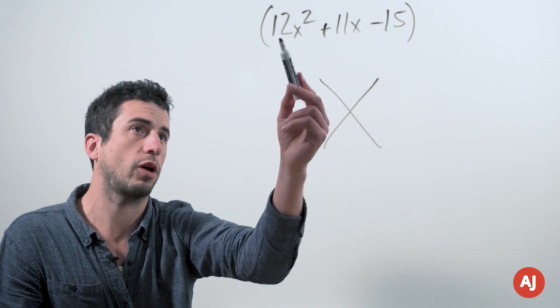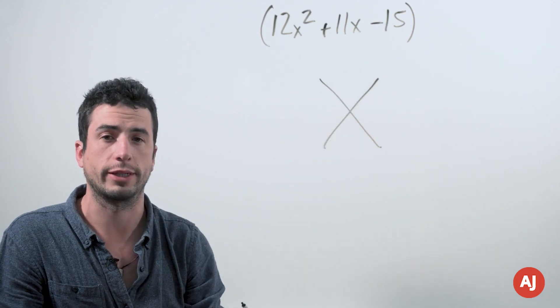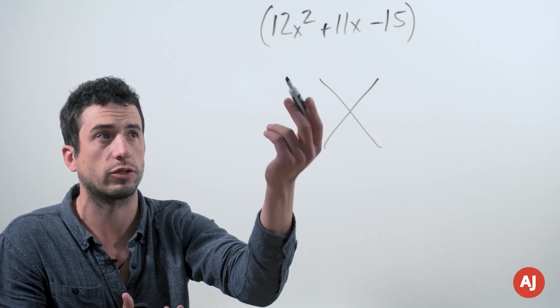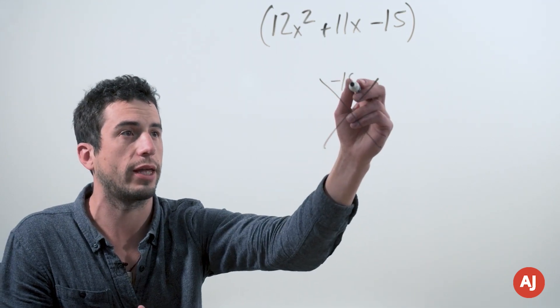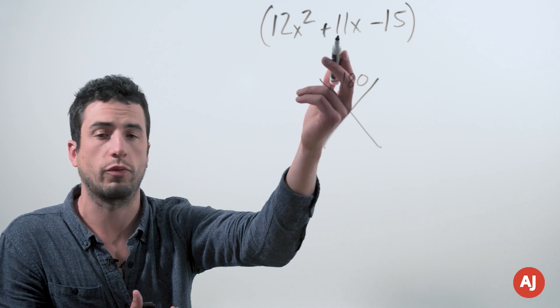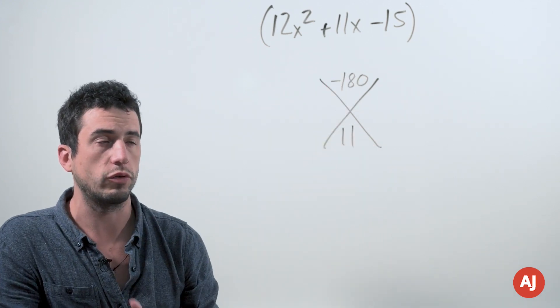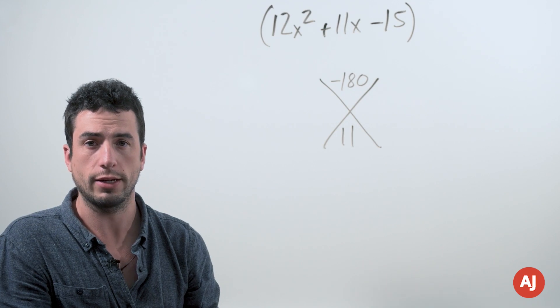In fact, really you just take the first coefficient and the last one and multiply them together. Normally the first coefficient is 1, so we don't need to worry about that, but in this case it's a 12. We multiply them together, we get negative 180, and if we take that middle coefficient, we have an 11 here. So the trick now is to figure out the two numbers that multiply to negative 180 and add to 11.